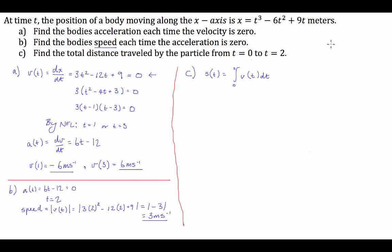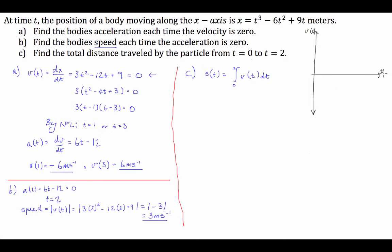I'll draw a rough set of axes graphing v(t) against time. When t = 0, v(t) = 9. We know velocity equals 0 at t = 1, and the turning point of the quadratic is at t = 2. The curve comes down from 9, crosses zero at t = 1, and continues below the axis.